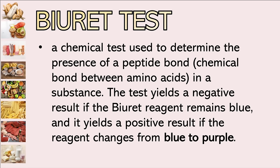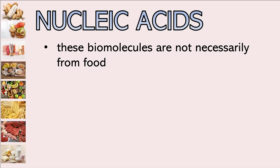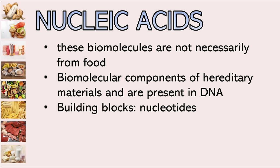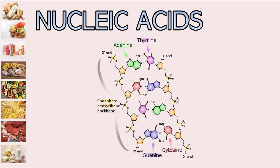The third type of macromolecule is nucleic acids. These biomolecules are not necessarily from food. We already discussed these in the third quarter — they are very important components in heredity because they are present in DNA. The monomer for nucleic acids is called a nucleotide. The elements that make up nucleic acids are carbon, hydrogen, oxygen, nitrogen, and phosphorus — CHONP. The nucleic acids include adenine, thymine, cytosine, and guanine, all of which have complex structures containing those five elements.